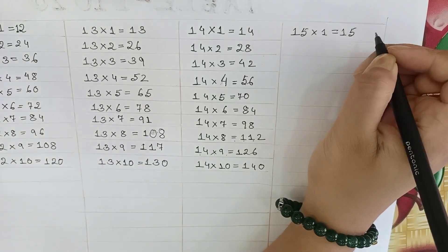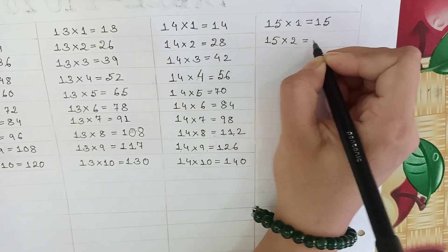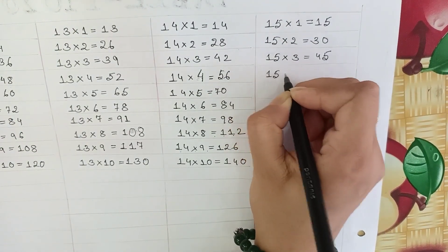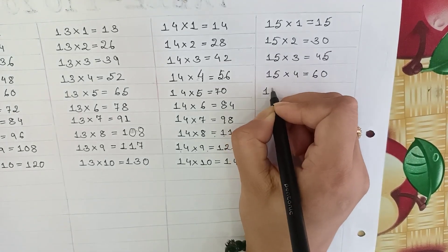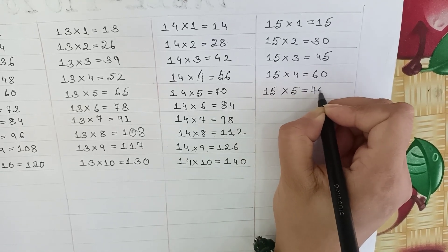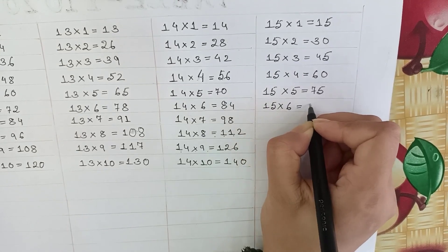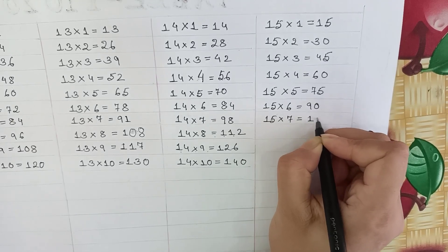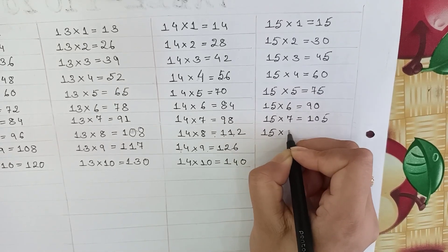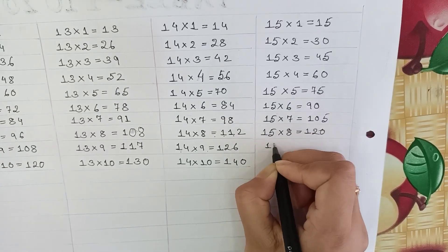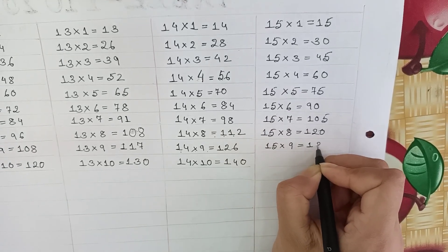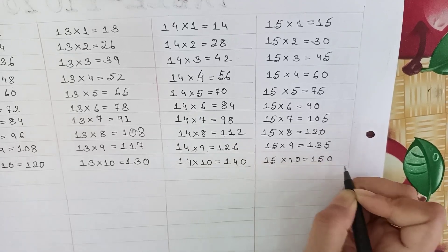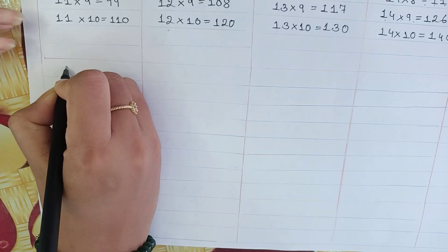Next: 15 into 1 is equal to 15. 15 into 2 is equal to 30. 15 into 3 is equal to 45. 15 into 4 is equal to 60. 15 into 5 is equal to 75. 15 into 6 is equal to 90. 15 into 7 is equal to 105. 15 into 8 is equal to 120. 15 into 10 is equal to 150.